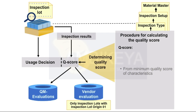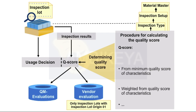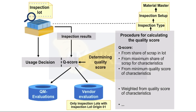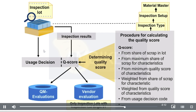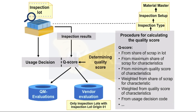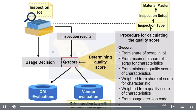For example, the following calculation procedures are available: quality score based on the share of scrap in the inspection lot; quality score based on the maximum share of scrap for the characteristics; quality score based on the weighted share of scrap for the characteristics; quality score from the usage decision code. You can use your own function modules to supplement the calculation procedures available in the system. Additionally, a quality score based on a standardized statistical value is available.